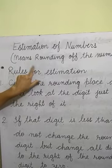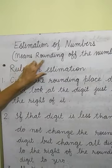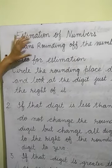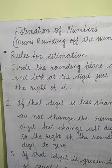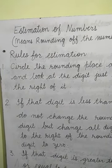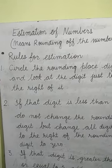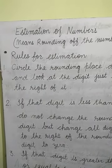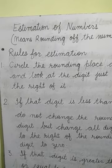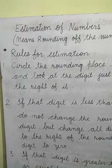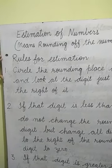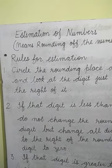Estimation of numbers means rounding of numbers — it is the same, we have only changed the words. We have done rounding of numbers to the tens, to the hundreds, to the nearest thousand in chapter 1 also. Here we will just revise the rules of estimation, the rules of rounding of numbers.